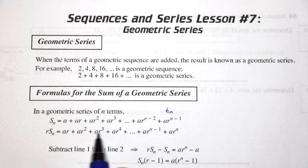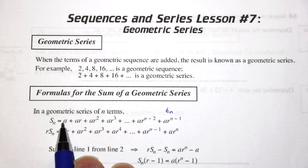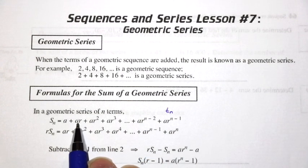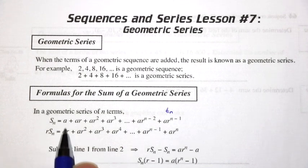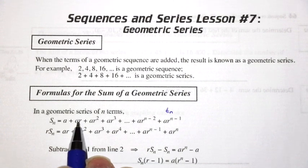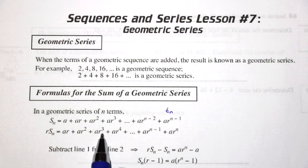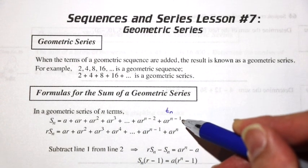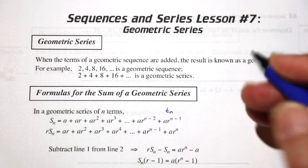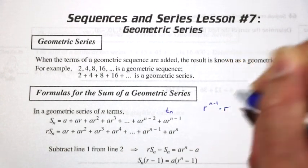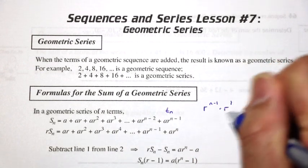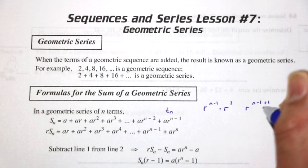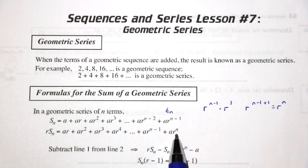If you multiply every single term here by r — put r here, put another r here, so this would be ar squared, put another r here — you can see on the left side you have r times the sum of the series. Then instead of just a, you would have a times r; this second term that used to be ar is now ar squared. In the end, r to the n minus 1 times r to the 1 — remember that multiplying powers with the same base, you add the exponents — so this is r to the n minus 1 plus 1, which equals r to the n.